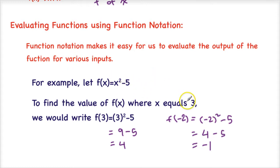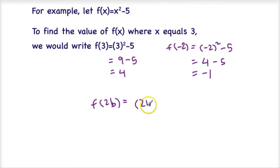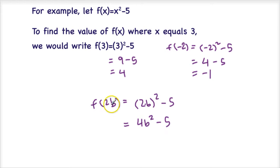So that's how we evaluate — we plug in different values for x. You might also see examples where they replace the x with another variable, like f of 2b. So instead of x, we replace it with 2b in parentheses. So this would be 2b squared minus 5 — we're just replacing x with 2b. Now I have 2b squared, which is a product, so I square each part. 2 squared is 4, b squared is b squared, and I still have minus 5. So 4b squared minus 5 is how I would evaluate that.